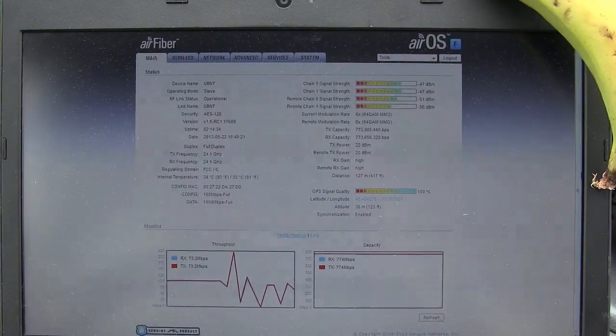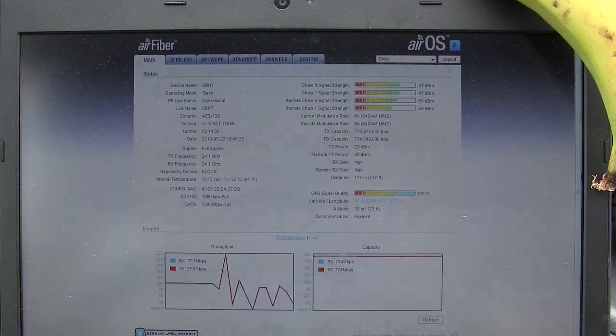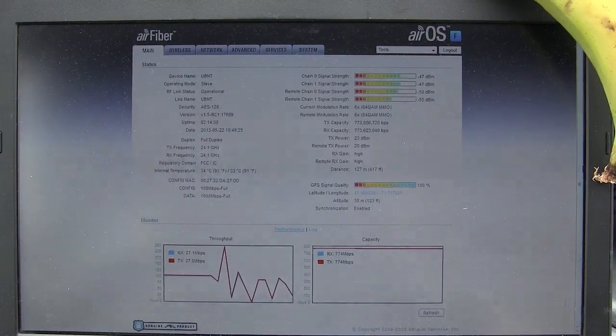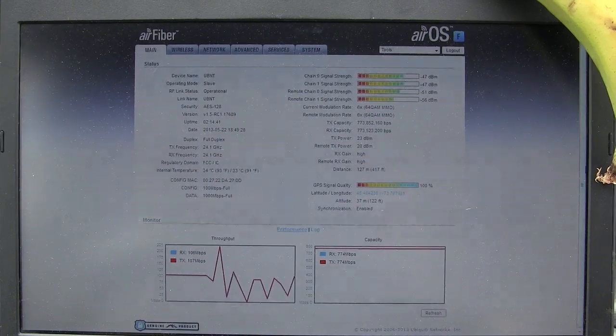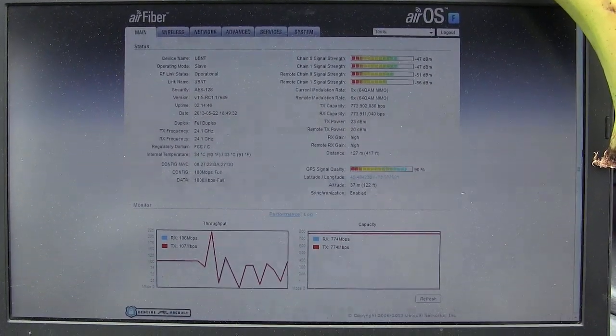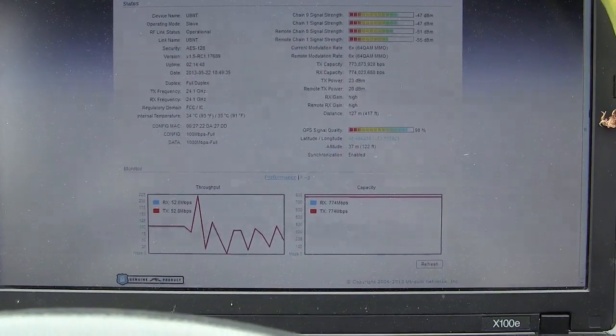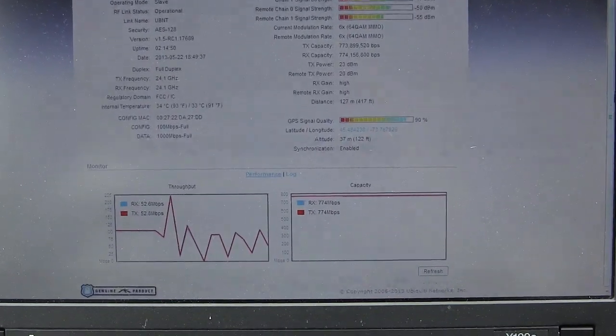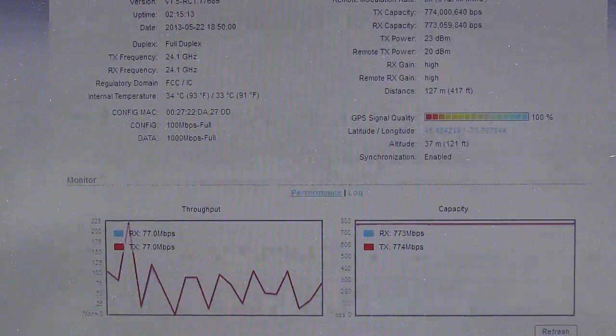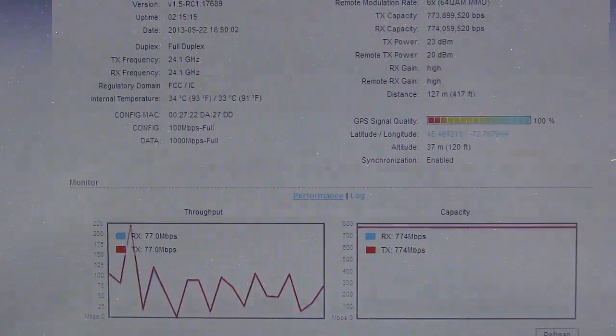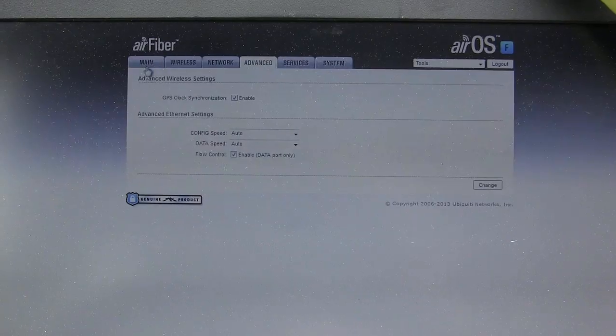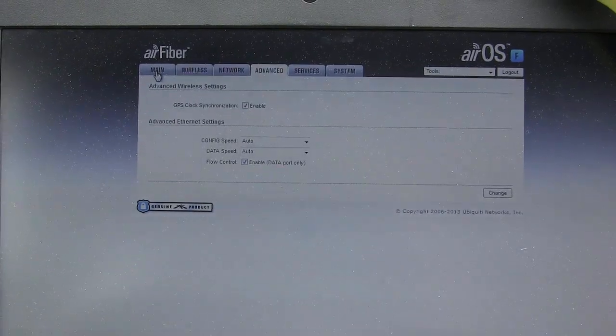So here we are, part two of the testing. We had our conference call with Chuck and Aaron and Josh, and we went through all the settings. So right now we did a little bit of tweaking as per the recommendations. The bottom line is the capacity line, as long as we're holding solid at 774 in both directions, we should be good to go. We got our GPS sync. We got everything in full duplex. We've upgraded to the latest firmware.